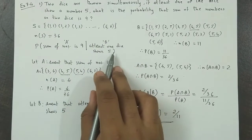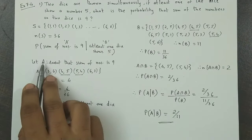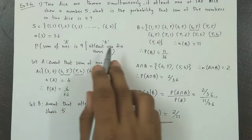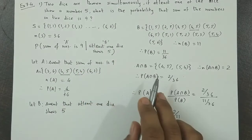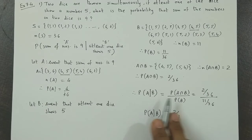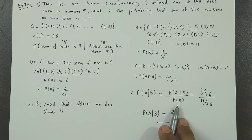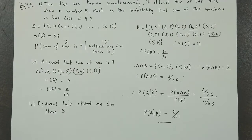at least one of the dice shows 5. Then event B is at least one dice shows 5, so A given B. First calculate event A's probability, that is sum of numbers is 9. Then event B, that is at least one dice shows 5. Then both's intersection, and then we can obtain probability of A given B, which is P(A intersection B) upon P(B), and the final value is 2/11.